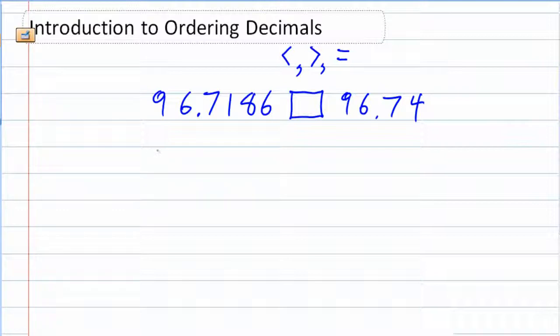I like to write them right above each other, 96.7186. That's the one on the left. And then below it, 96.74.